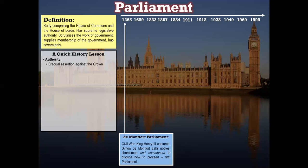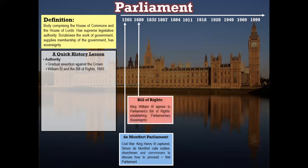There was a gradual assertion of power and authority against the Crown. We're going to look at the end of that story in 1689, when William III — a brand new king, invited to rule the country in the Glorious Revolution of 1688 by Parliament — accepted Parliament's Bill of Rights, and in so doing accepted that Parliament had superiority over the Crown. This was the establishment of Parliament's sovereignty, the point at which Parliament became primary sovereign.